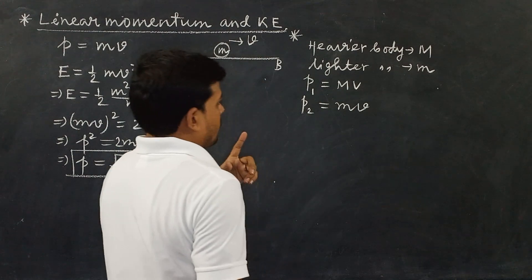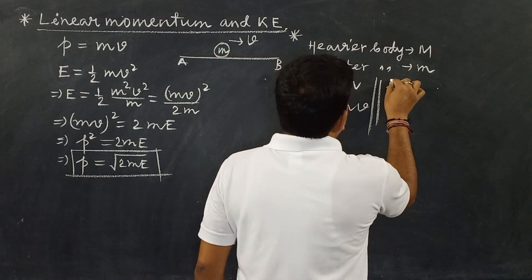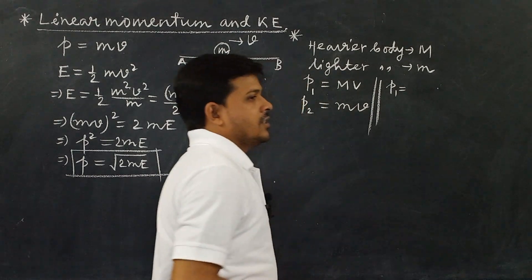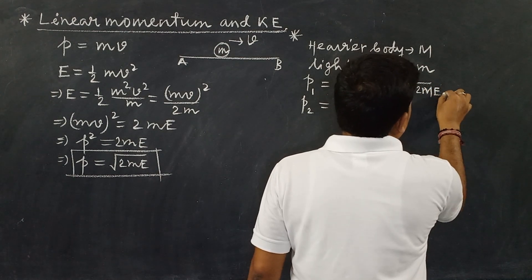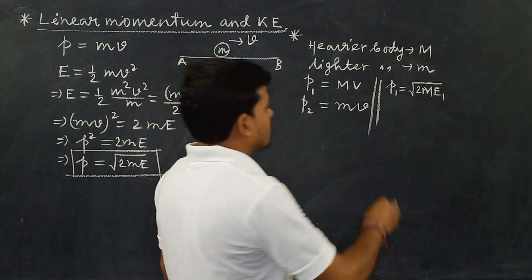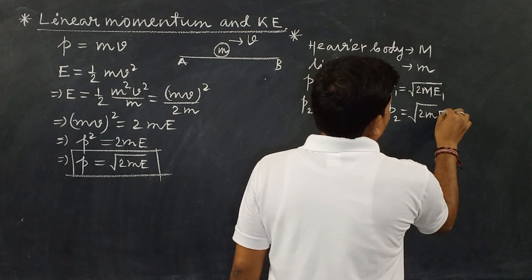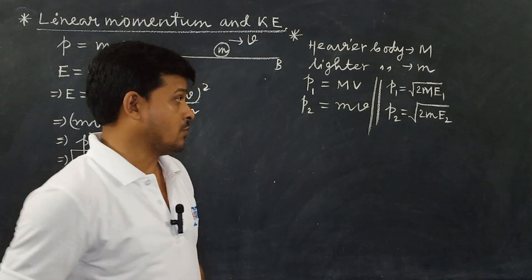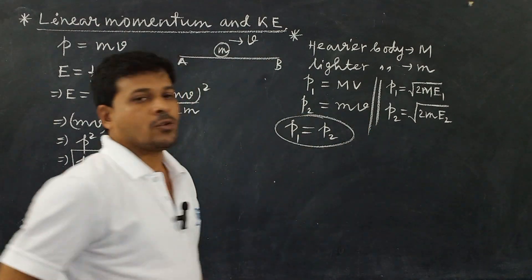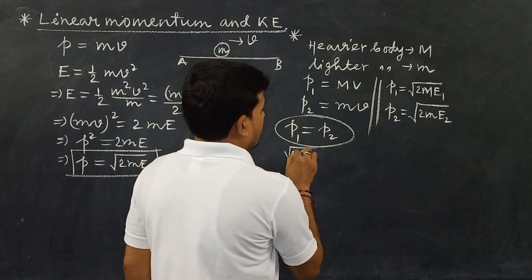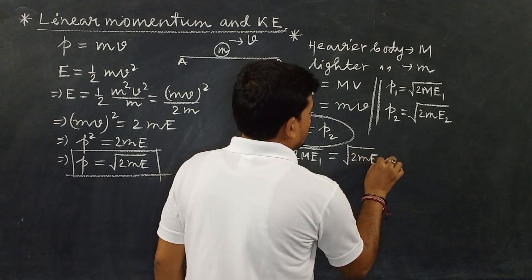What will be the kinetic energy? Using the standard relation p equals root over 2mE, we write P1 equal to root over 2 capital M times E1, where E1 is the kinetic energy of the heavier body. Similarly, P2 equals root over 2 small m times E2, where E2 is the kinetic energy of the lighter body. The given condition is P1 equals P2, so root over 2 capital M times E1 equals root over 2 small m times E2.